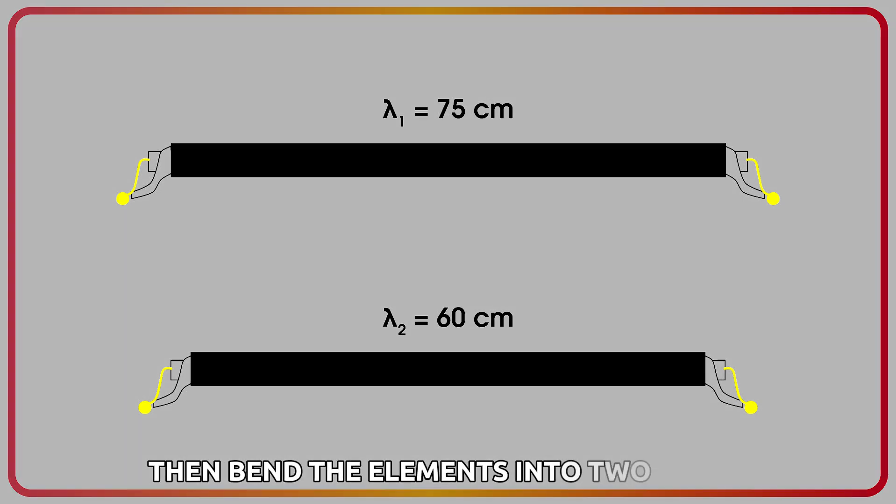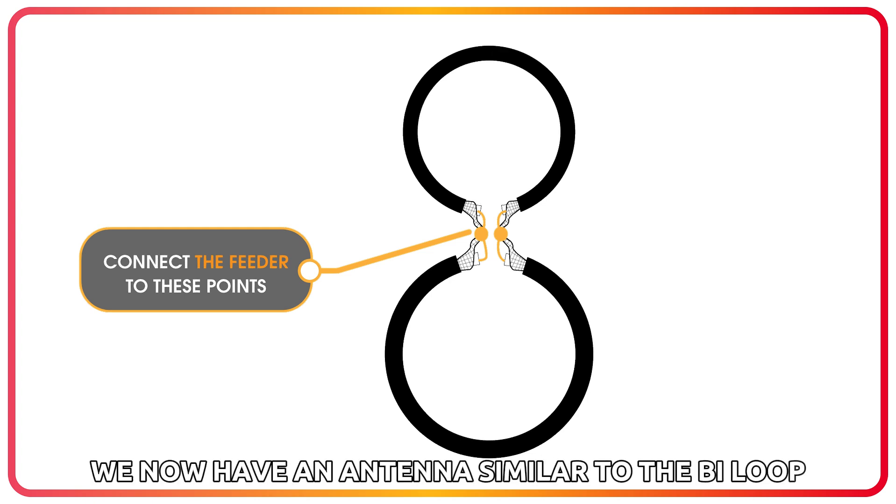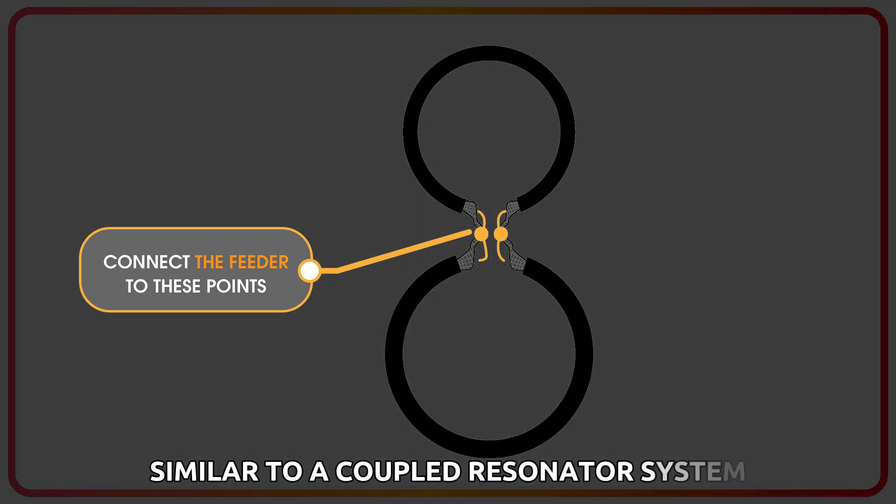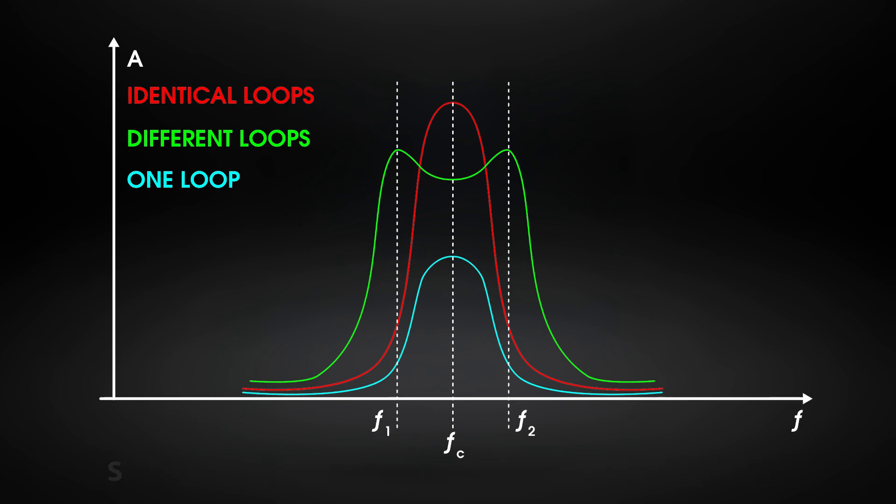Then bend the elements into two loops, connect them, and solder the feeder. We now have an antenna similar to the bi-loop, but this version will have not just one sharp resonance, but a U-shaped frequency response similar to a coupled resonator system. Thanks to this, the antenna will better receive signals from stations operating at different frequencies.